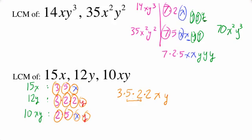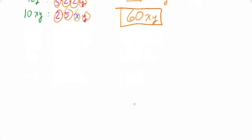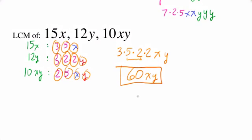So our final answer is, I like to make 10s. 5 times 2 is 10, 3 times 2 is 6, so this would be a 60xy. And that is our last example.